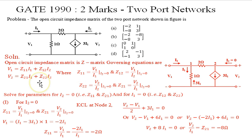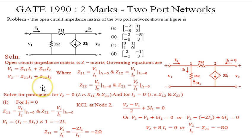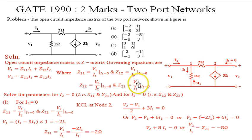To find the parameters, we first set I2 = 0 to get Z11 and Z21, then set I1 = 0 to get Z12 and Z22. We start with I2 = 0 and the corresponding equivalent circuit. As per our defining equations, Z11 = V1/I1 when I2 = 0.